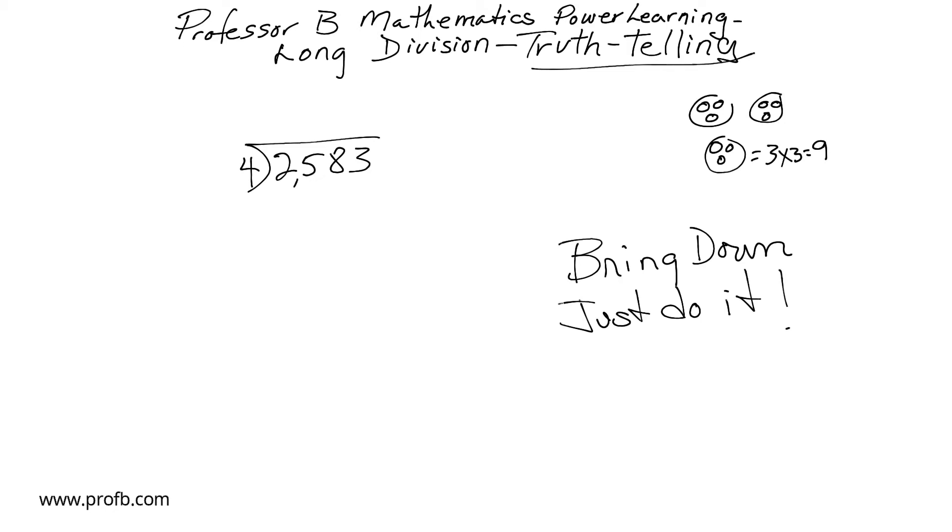So we start with a word problem. You have two thousand five hundred and eighty-three dollars. And you want to buy, hmm, let's say you want to buy cups for your school. And each cup is four dollars. Or for your store, maybe.